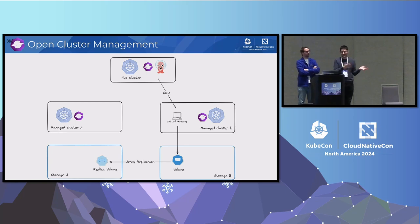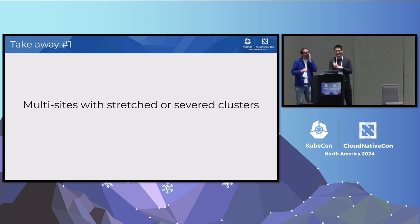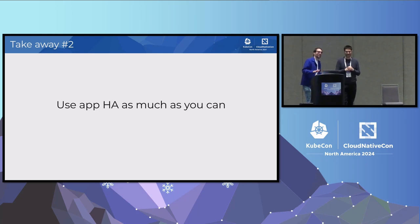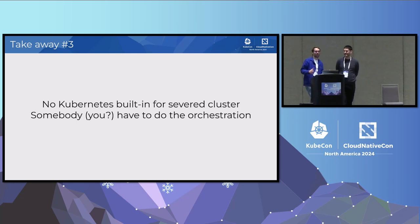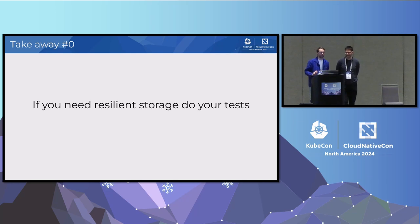There are many ways to do the same thing. If you go to the solutions showcase, they will sell you different kinds of these approaches — pick your poison carefully and do your testing. Key takeaways: you can do multi-site with stretched or separate clusters, which has a huge impact on your RPO and RTO objectives. Use application built-in high availability capabilities as much as you can. With separate independent clusters, there is not much built-in Kube support, so it will be up to a third party or you to do the orchestration. And lastly, do your own testing — there are many corner cases and pitfalls with storage management, especially for non-container workloads.